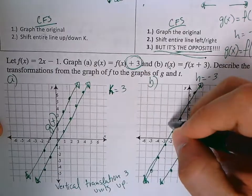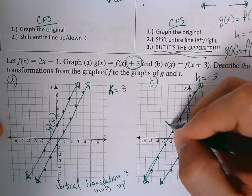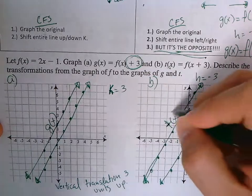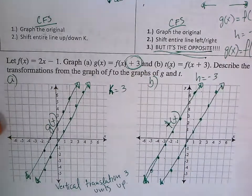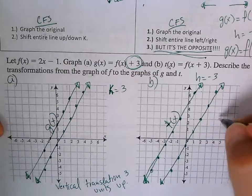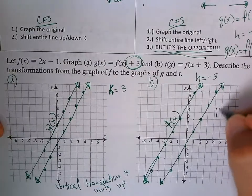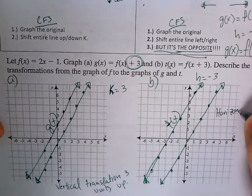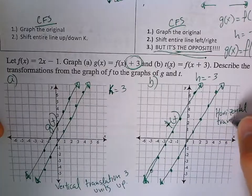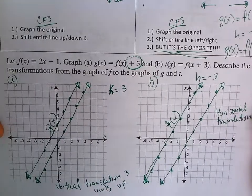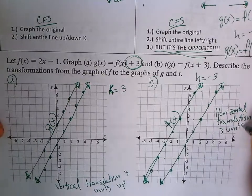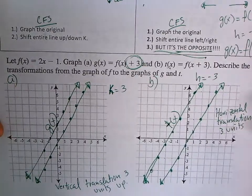This new line I just drew is t of x. To describe the transformation: this is a horizontal translation three units left.